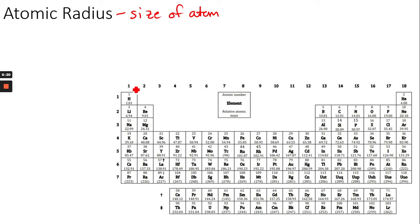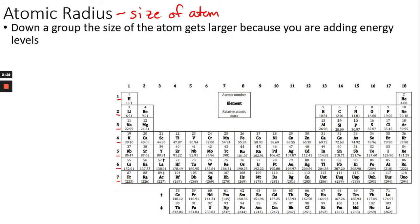The periods, or rows, are the same thing as energy levels. The more energy levels you have, the larger the atom gets. So as we go down a group, the atom gets larger. If we were to draw the atom going down group one, we would notice that it is getting larger as it goes down because it's gaining energy levels.